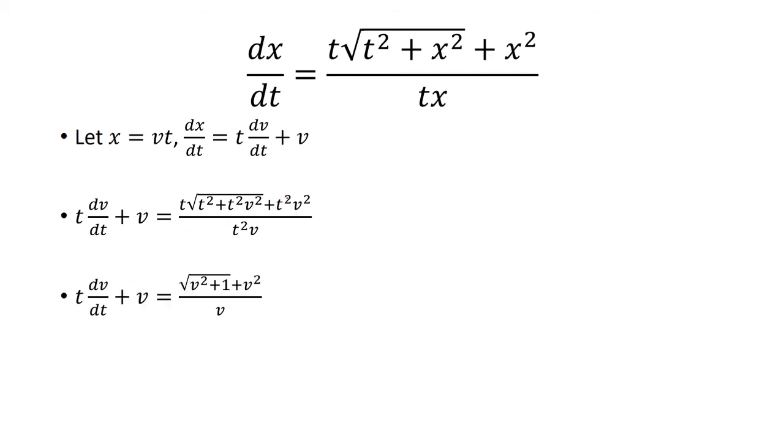Now, here, I skipped a step, but basically you have two factors of t squared, so you can pull that out. I have 1 plus v squared.